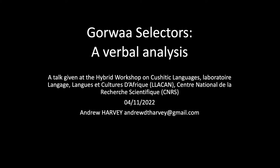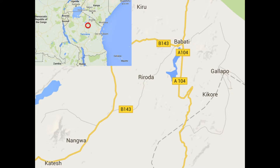Today I'd like to talk about Gorwa selectors, specifically about how they can be analyzed as auxiliary verbs. The selector is a central aspect of the grammar of Gorwa and of Southern Cushitic languages in general, but our understanding of the selector is still indeterminate or even vague. In analyzing the Gorwa selector as an auxiliary verb, using both morphological and distributional evidence, this talk seeks to present a novel analysis as well as provide a basis for further research on the verbal morphosyntax of Gorwa.